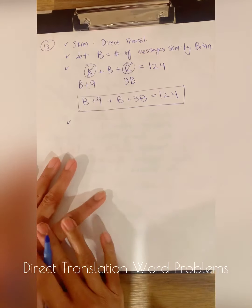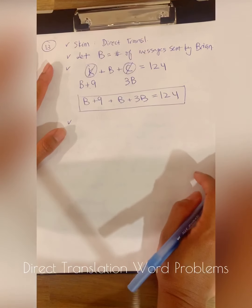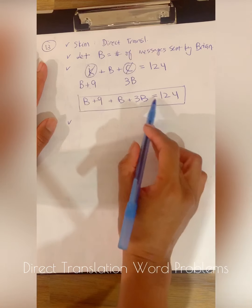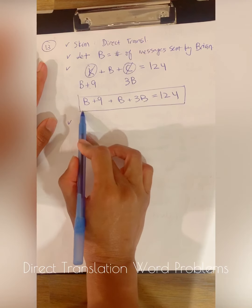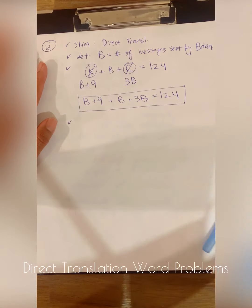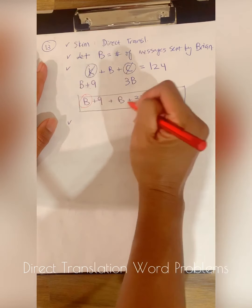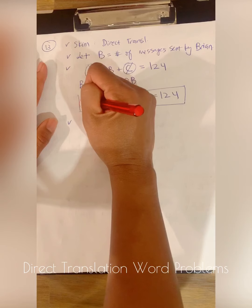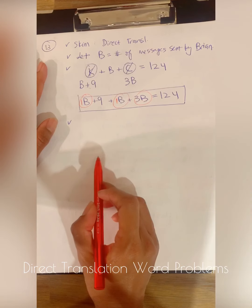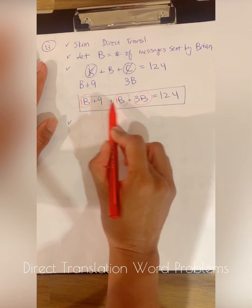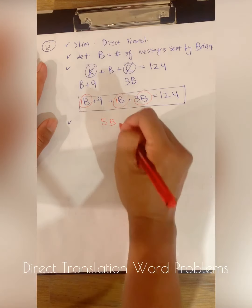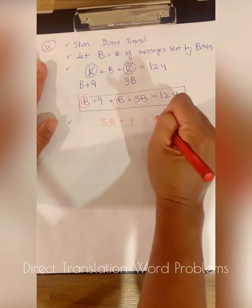So now this just becomes a normal equation that we learn how to solve. First thing I'm going to do is simplify the left and the right. The left side, like terms. So like terms is B, B, and 3B. So remember if there's a B here, there's an invisible one in the front. So three plus one plus one is 5B, right? Plus nine is equal to 124.